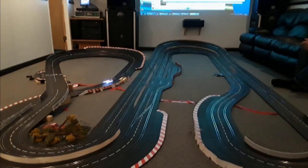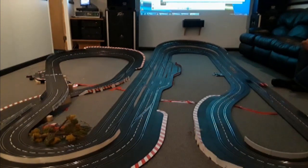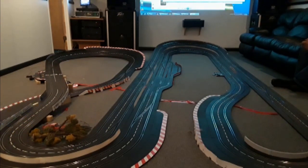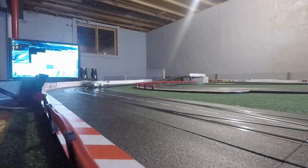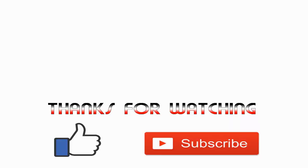One last thing that may apply to certain people — if you're thinking about starting a new slot car club in your home, having people come over, stay up late, make noise, reference this chart if you have a wife or live-in girlfriend. This shows the probability of success of your slot car club based on your wife or girlfriend type. Essentially, the probability of success is directly proportional to how tolerant she is. Hopefully this series has given you some ideas that you may want to integrate into your new or existing slot car club. That's it for us — thanks for watching!